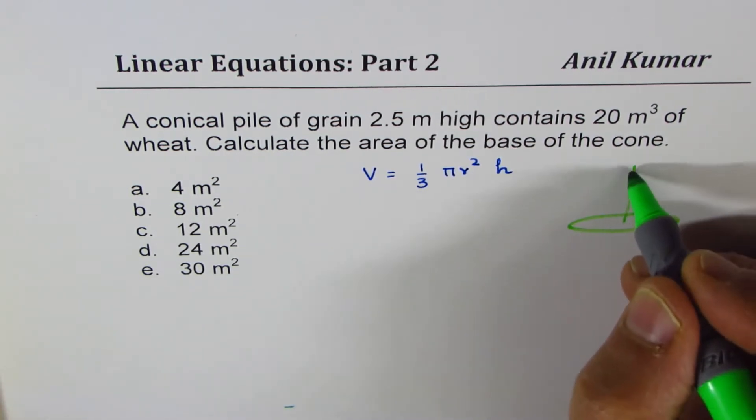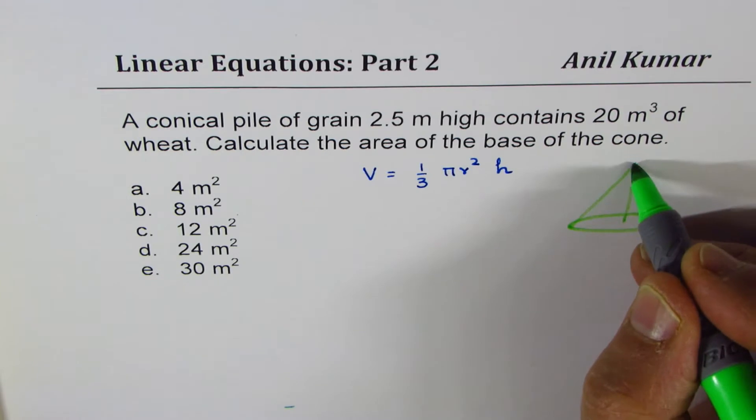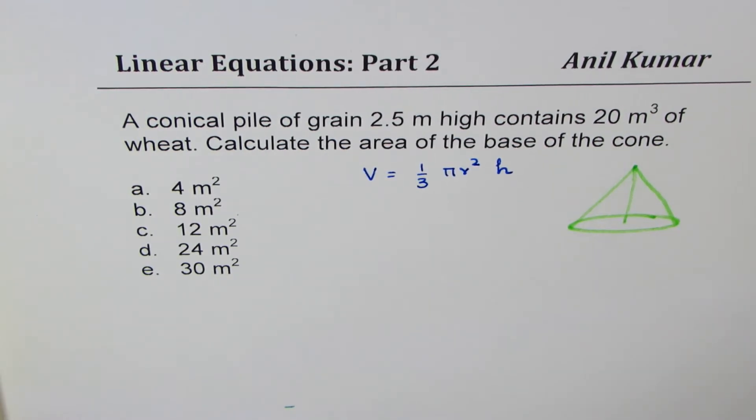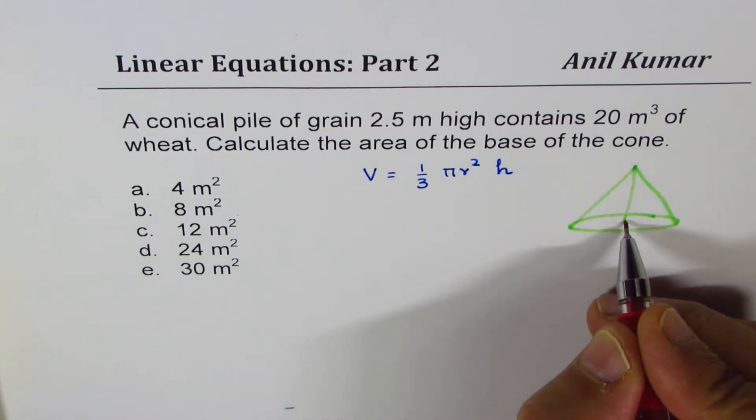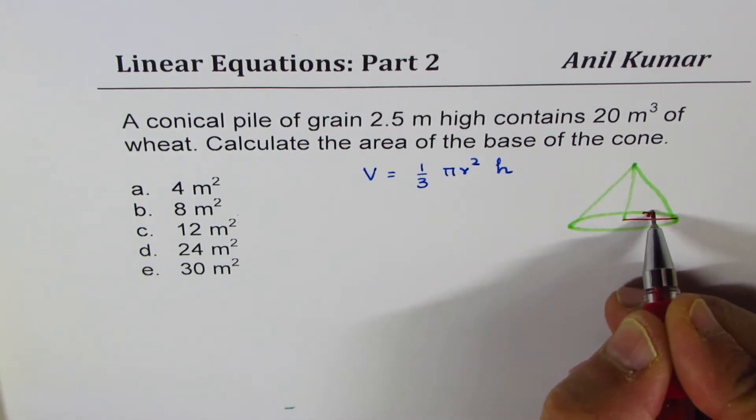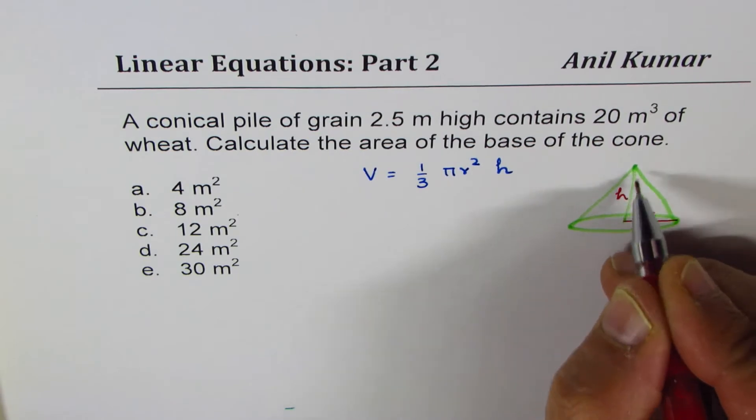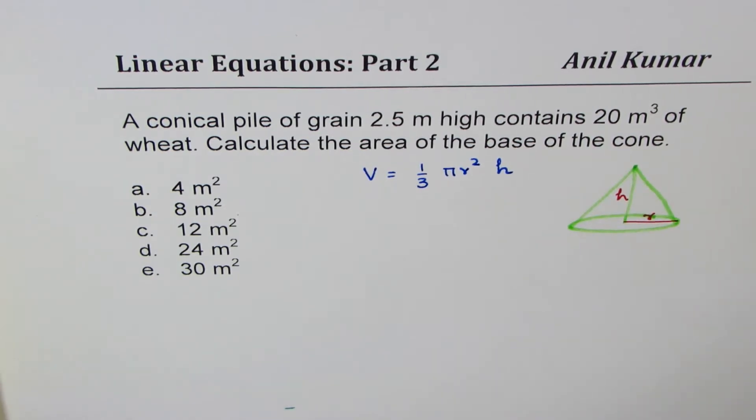So let's say that is the cone for us. In this cone, r is the radius of the base and h is the height.